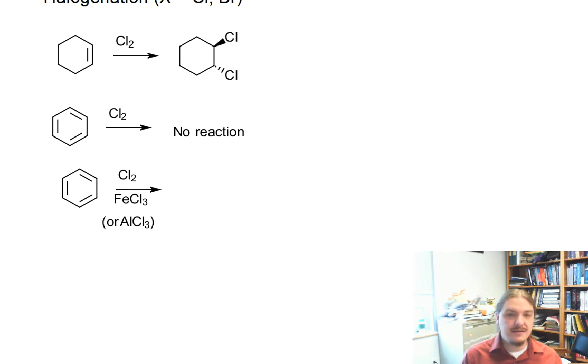then this reaction does, in fact, lead to halogenation. And I'm going to show the mechanism using chlorine, but in all cases, bromine with the iron bromide or aluminum bromide is going to work just as well the same way.